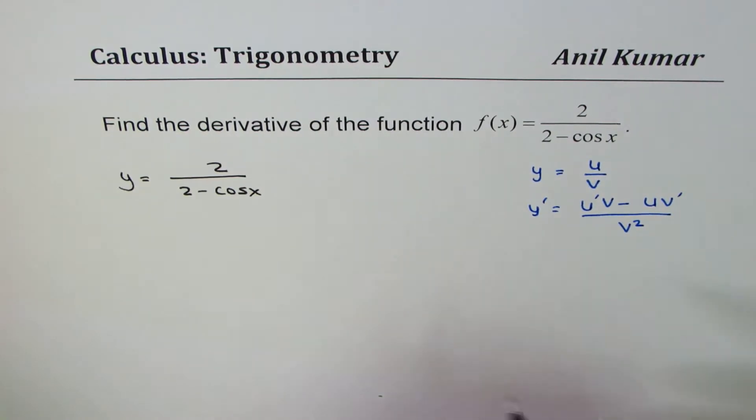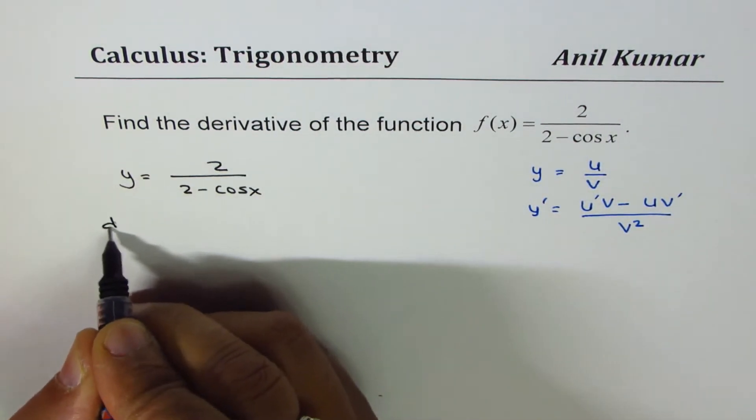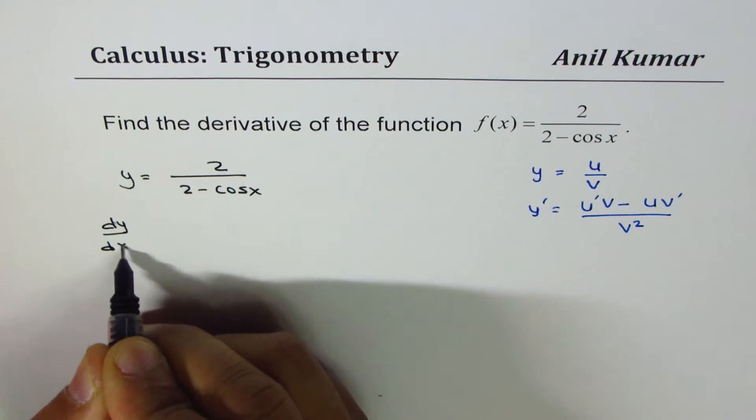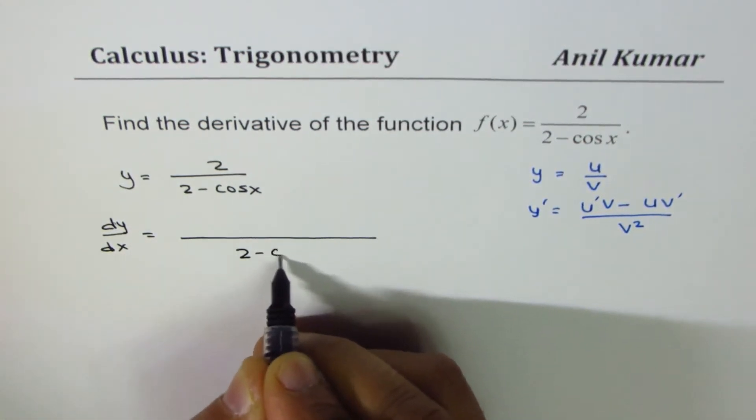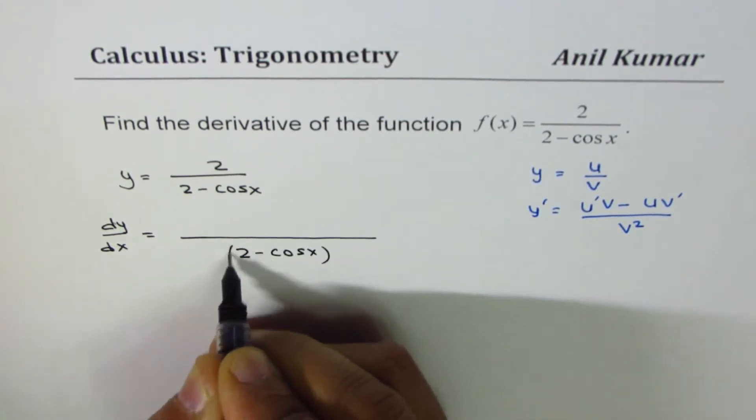So let's apply quotient rule and solve this. dy dx will be equals to the denominator here is 2 minus cos x whole square.